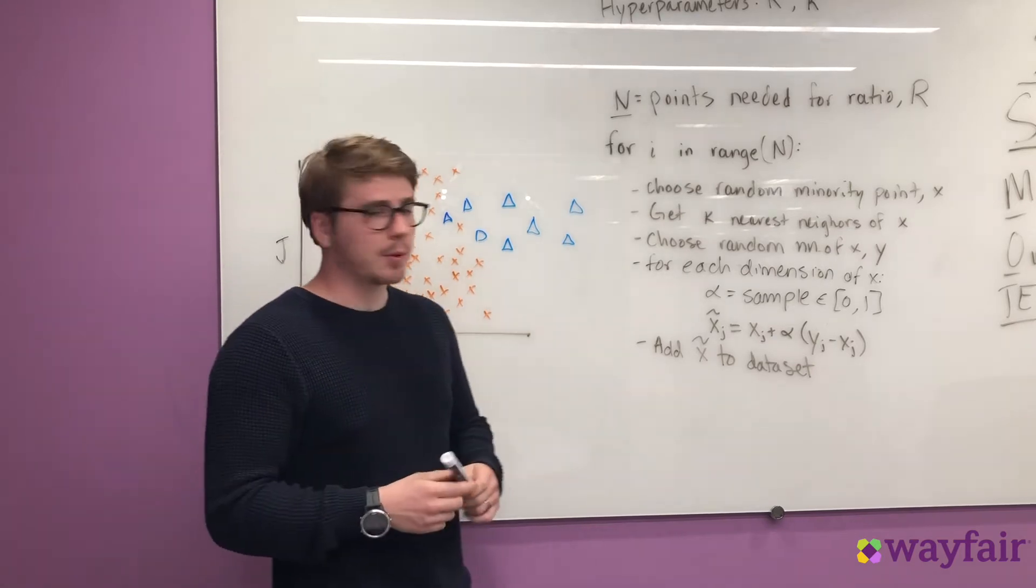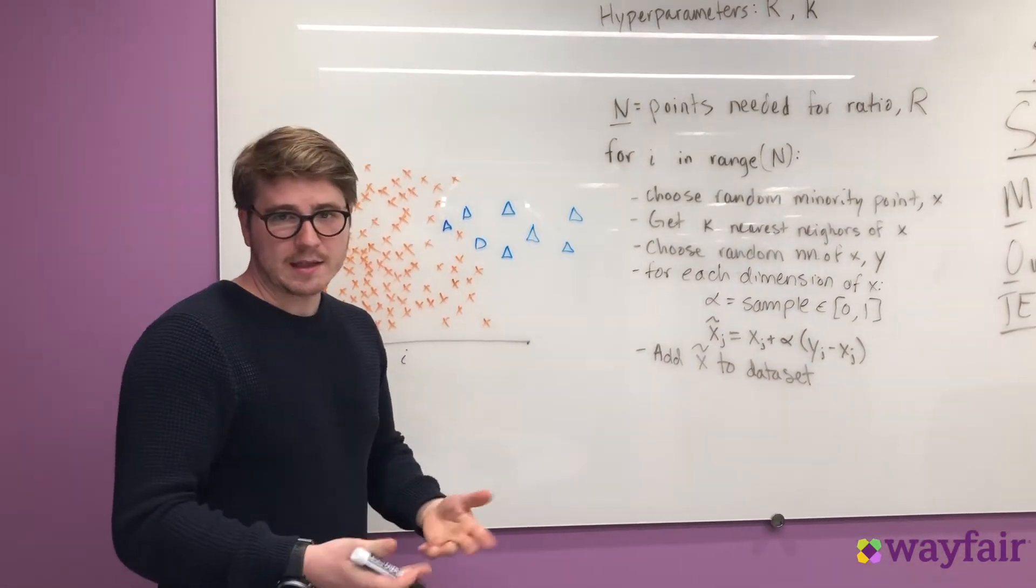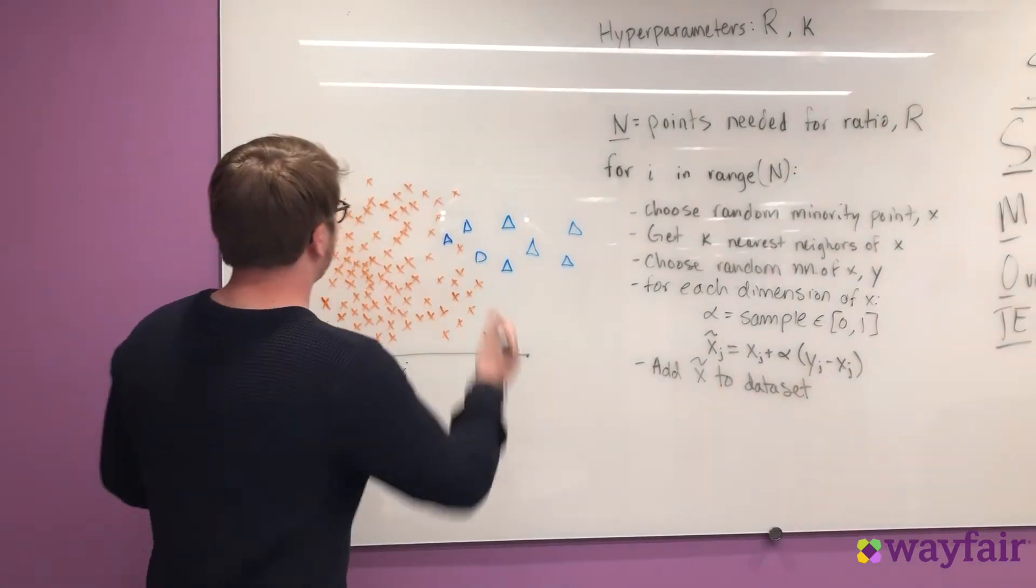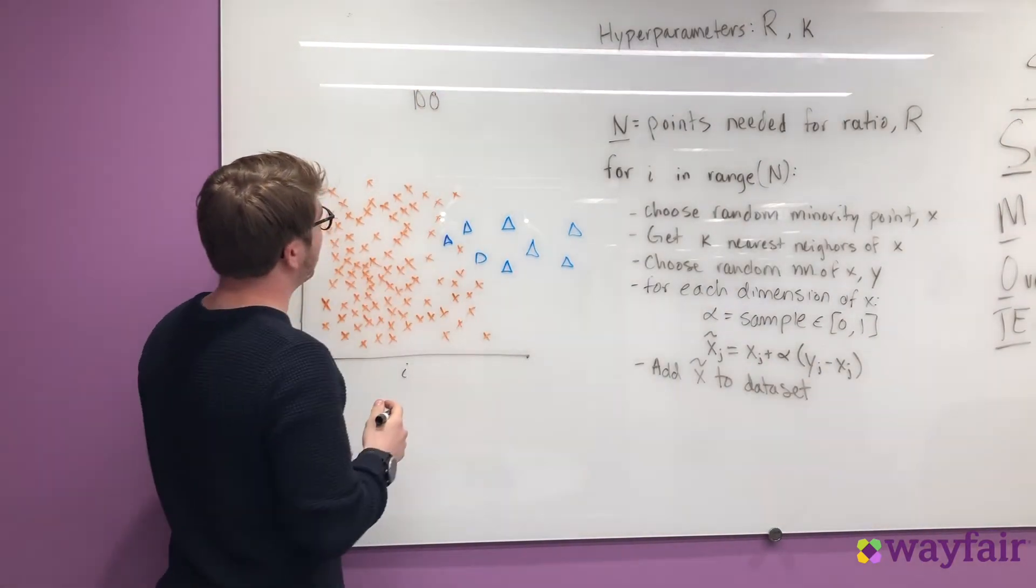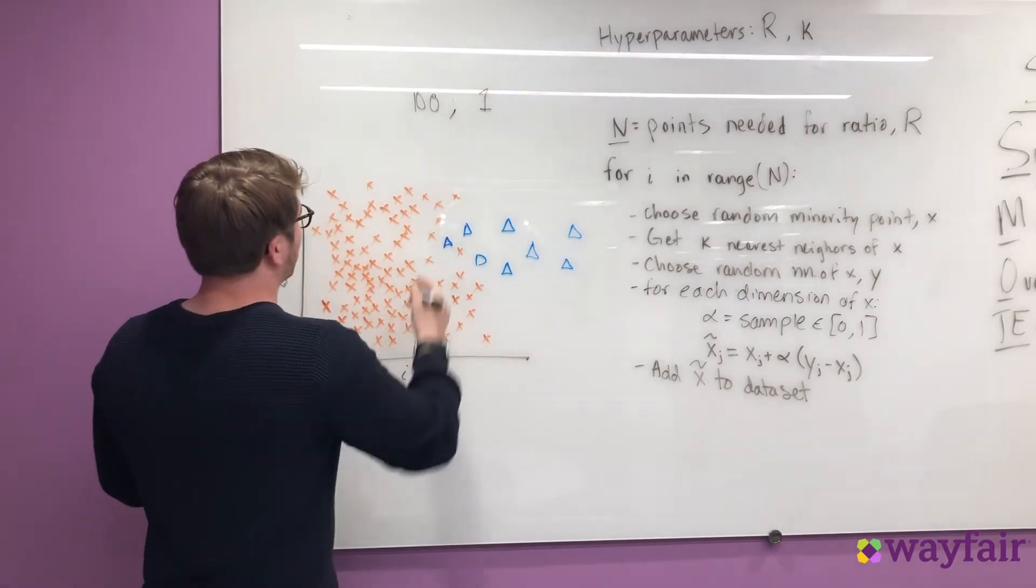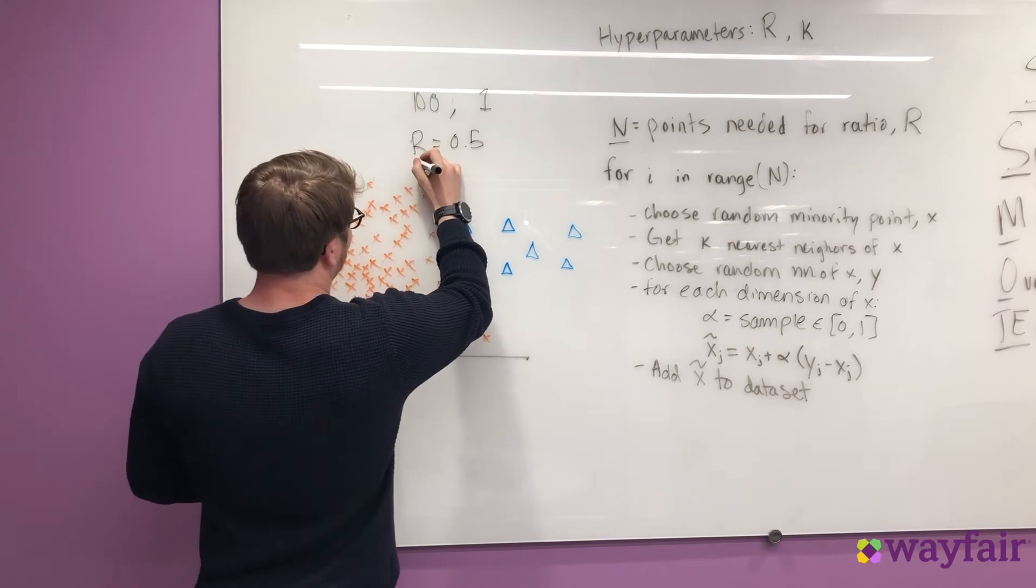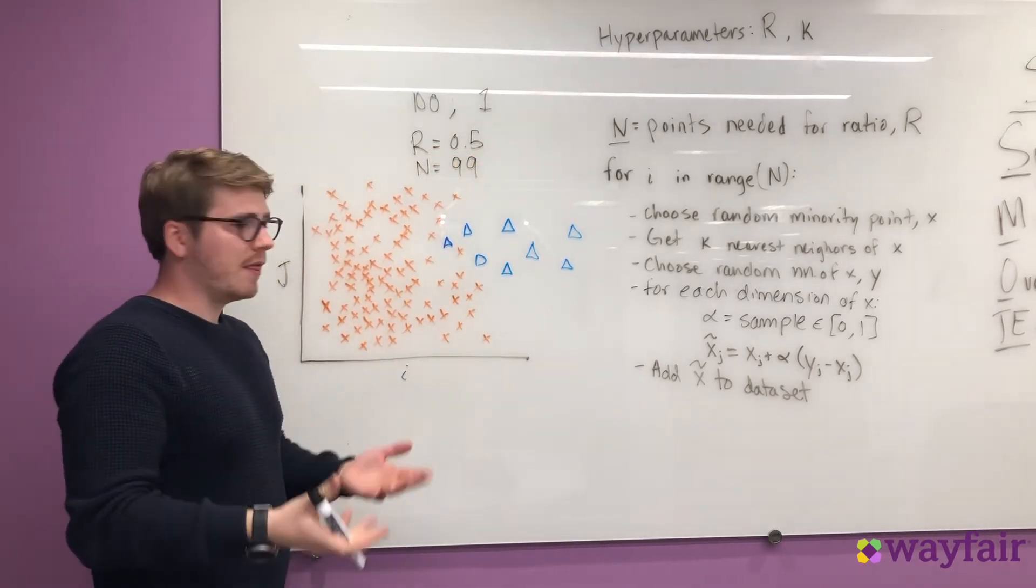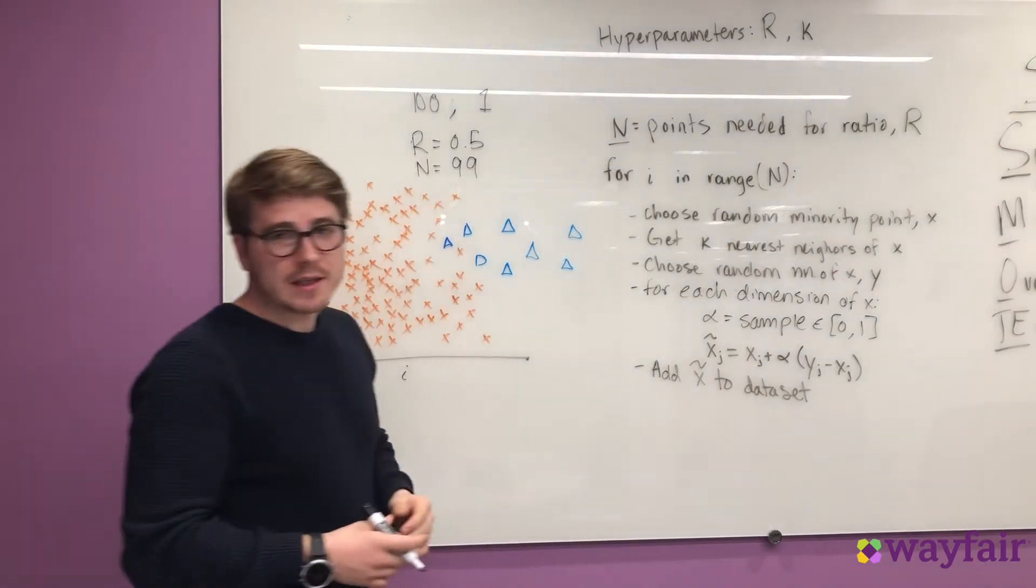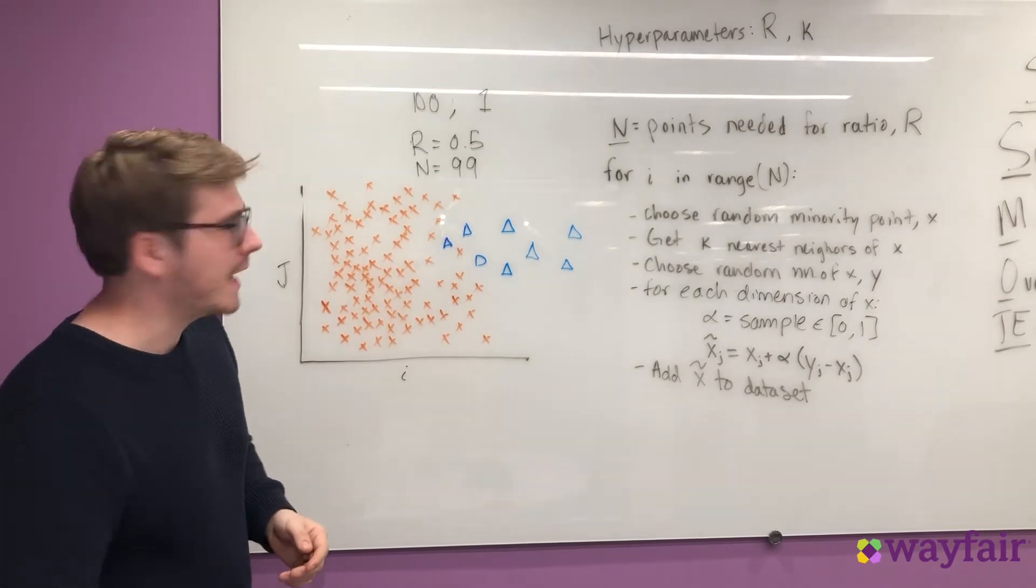So how do we do that? We start by choosing two hyperparameters, R and K. R represents the ratio of our final data set that we want between the minority and majority case after we've performed SMOTE. So as an example, let's say that we have a hundred non-fraudulent orders and we only have one fraudulent order. If our final ratio is 0.5 or a one-to-one final ratio, then we know we're going to need to create 99 new synthetic points so that we have a balanced data set. The other hyperparameter is K and that chooses the number of nearest neighbors we use when we create the synthetic data points.